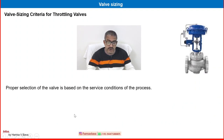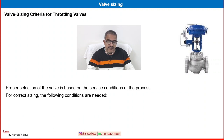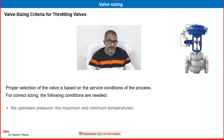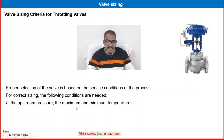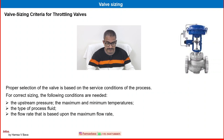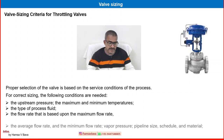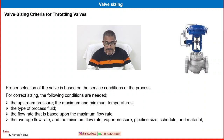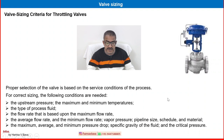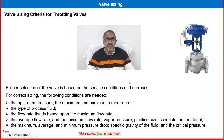Proper selection of the valve is based on the service conditions of the process. For correct sizing of throttling valves, the following conditions are needed: upstream pressure and maximum and minimum temperature, type of process fluid, flow rate (maximum, average, and minimum), vapor pressure, pipeline size, schedule and material, maximum/average/minimum pressure drop, specific gravity of the fluid, and critical pressure. These are the important factors affecting valve sizing for throttling valves.